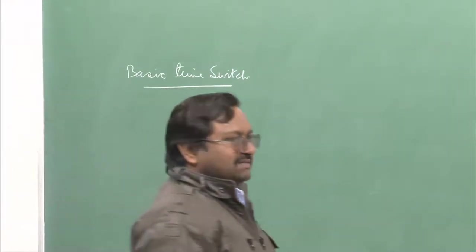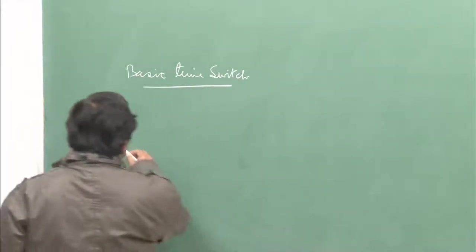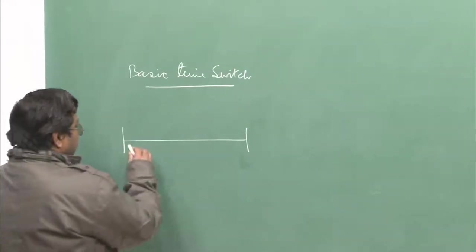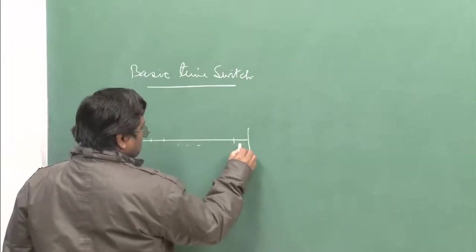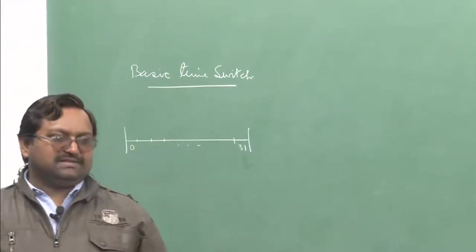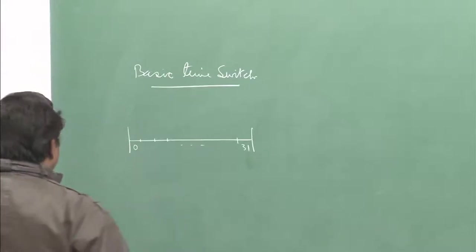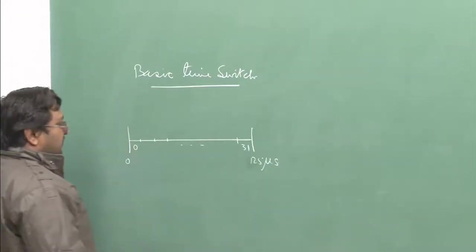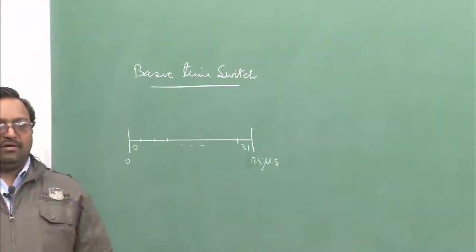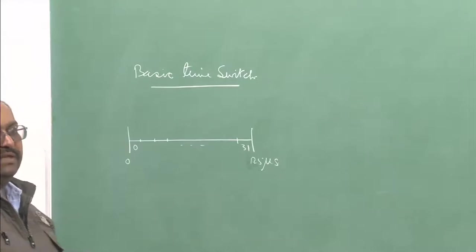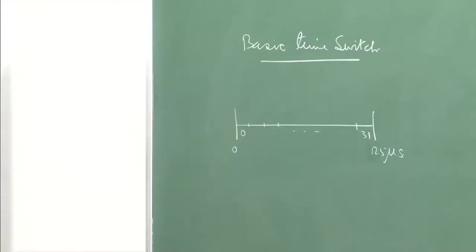Before we start designing, we can take an E1 carrier system. An E1 carrier system has, as all of us know, a total of 32 voice slots — 32 octets per 125 microseconds. Out of these, two slots are already occupied by design: one for signaling and one for framing, so that frame boundaries can be identified at the receiver end.